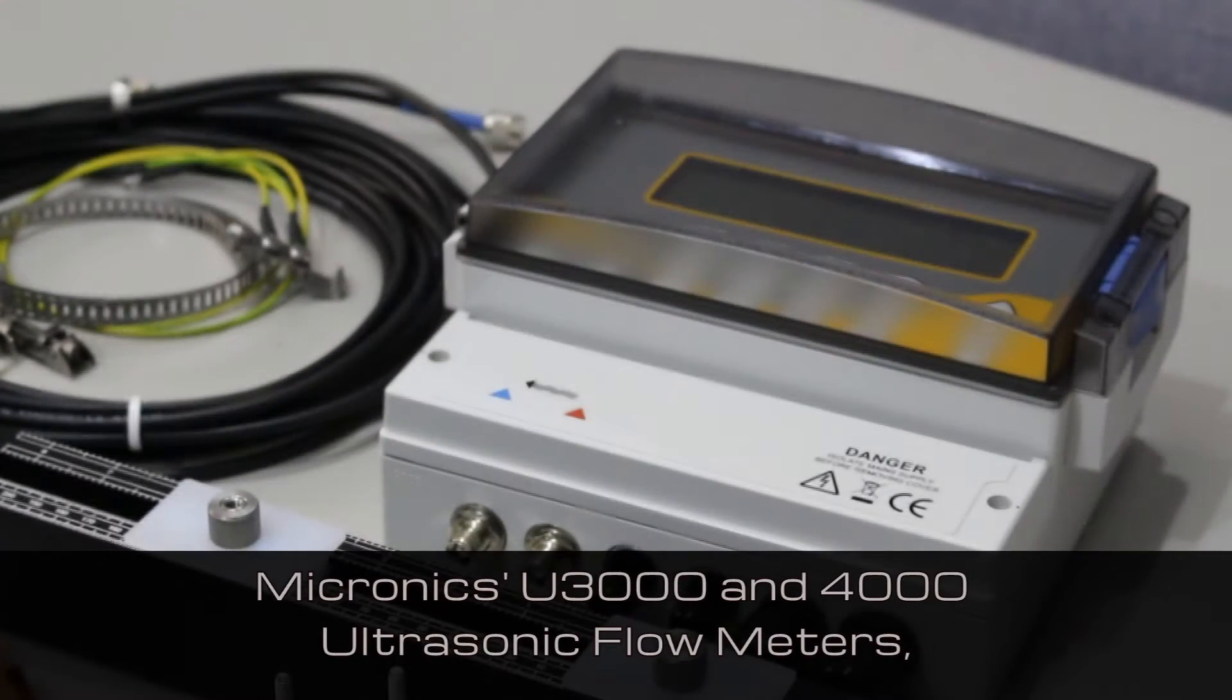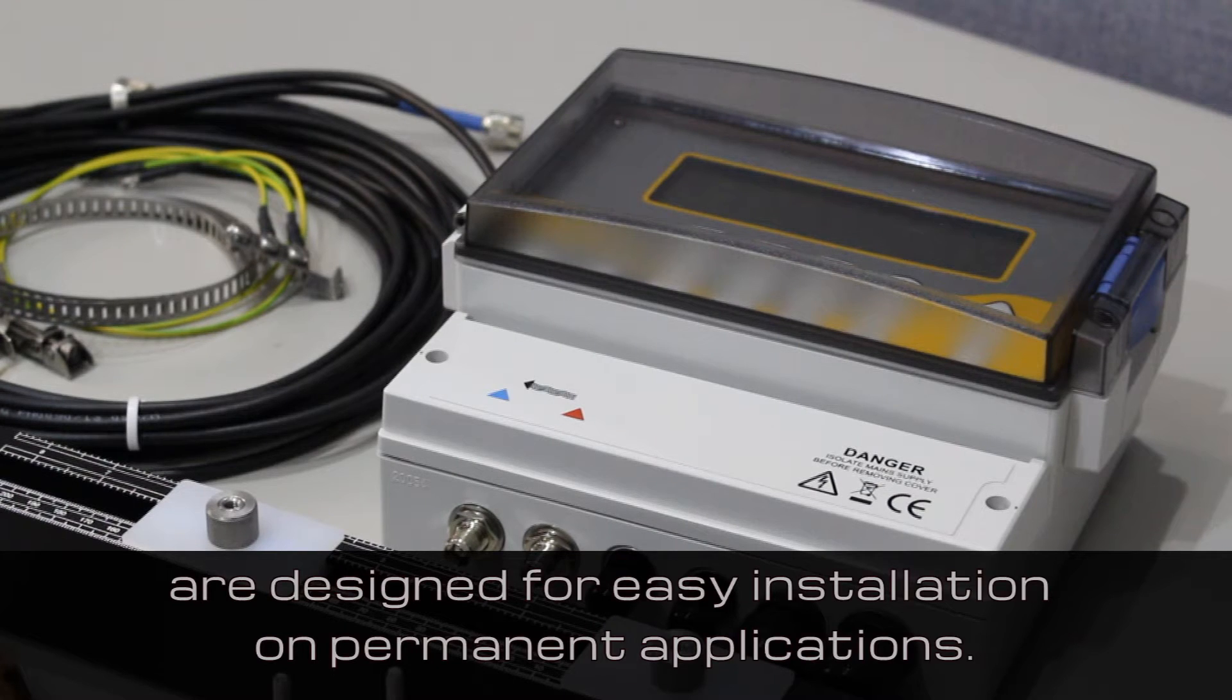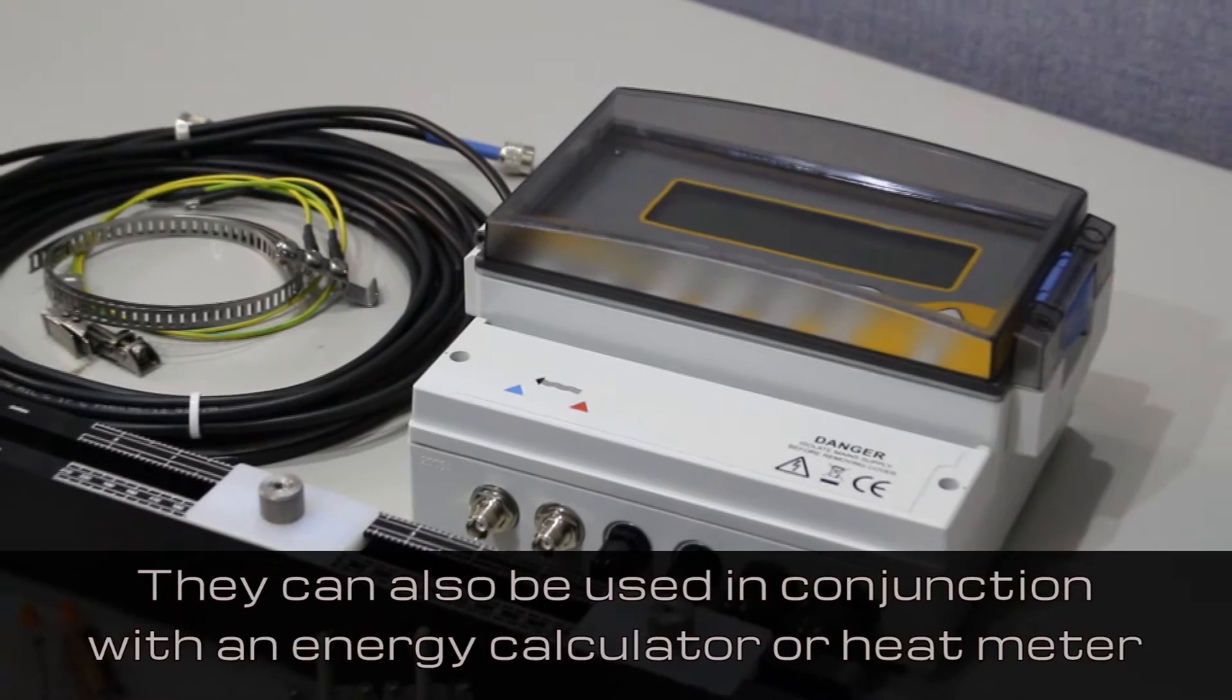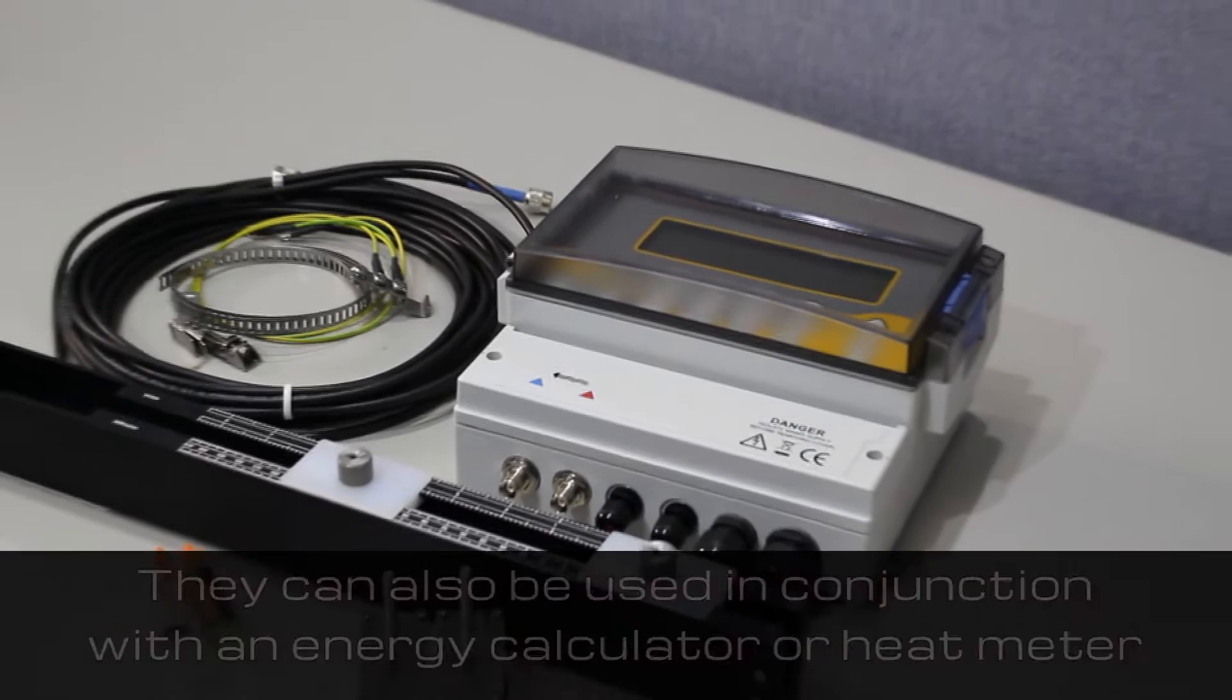Micronix U3000 and 4000 ultrasonic flow meters are designed for easy installation on permanent applications. They measure flow just like any other meter, except that they can also be used in conjunction with an energy calculator or heat meter to measure energy consumption.